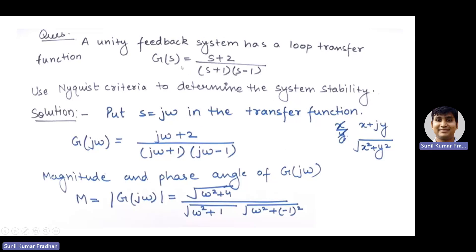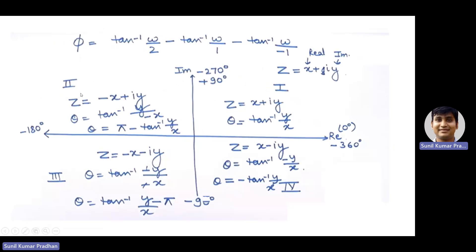We adopt the same process: put s = jω. So G(jω) = (2 + jω) / [(1 + jω)(−1 + jω)]. The magnitude is: |G(jω)| = √(ω² + 4) / [√(ω² + 1) · √(ω² + 1)]. The phase is: tan⁻¹(ω/2) minus tan⁻¹(ω/1) minus tan⁻¹(ω/(−1)). It is very important to correctly find the phase while determining the polar plot.